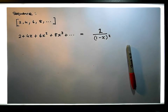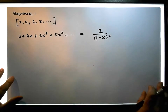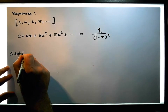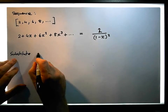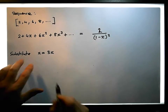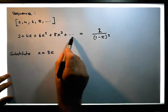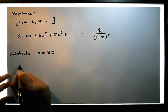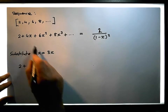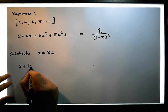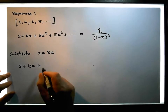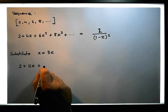So let's do a different type of substitution. Let's say we substitute x = 3x as an example. So what we end up with is this power series becomes: 2 plus 4 times 3x — four times three is 12 — so that gives us 12x, plus 6 times (3x)².